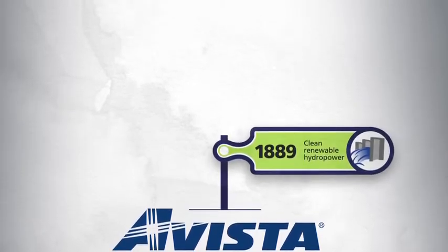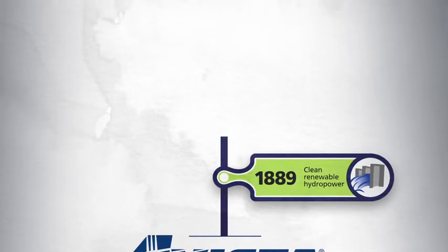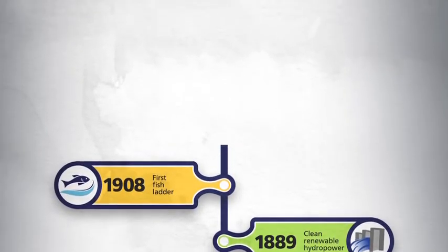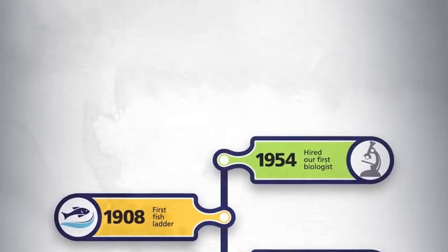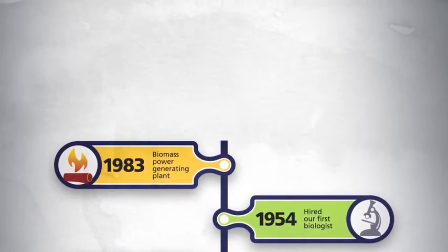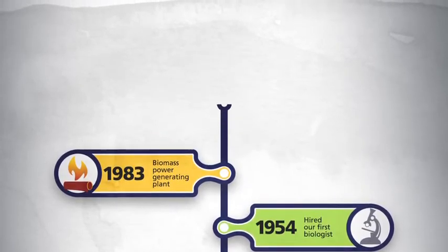Our company was founded in 1889 on clean, renewable hydropower. We installed our first fish ladder back in 1908. We were one of the first utilities in the nation to hire a biologist. We built the first biomass power-generating plant of its kind in 1983.